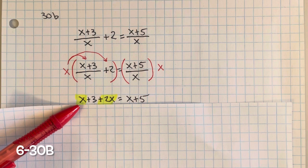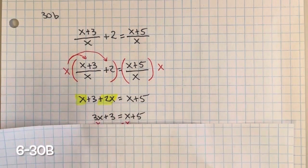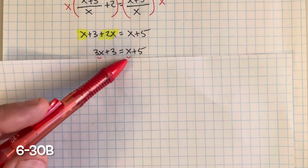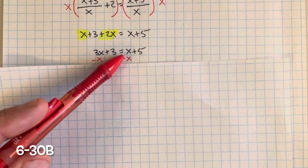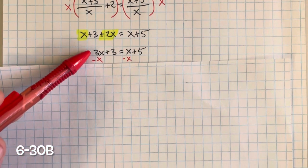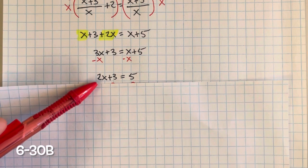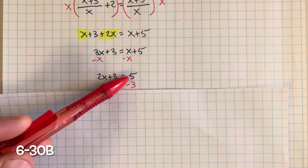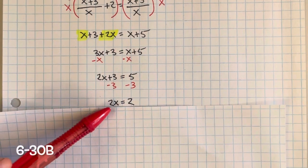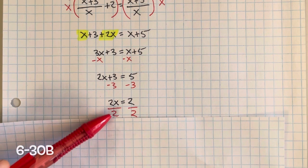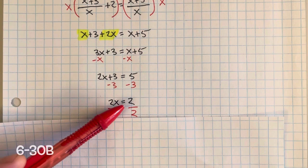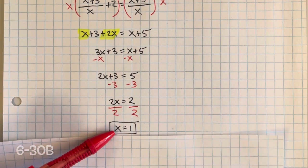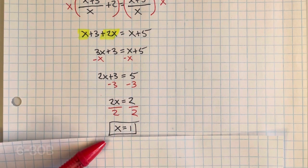We have like terms, so we simplify by combining them. 2x plus x equals 3x. We still don't have x by itself, so we subtract x from both sides — zero pair. 3x minus x equals 2x. The inverse property of addition is subtraction, so we subtract 3 from both sides — zero pair. 5 minus 3 is 2. This is multiplication, so we divide by 2 to create the giant 1. 2 divided by 2 is 1, and 1 multiplied by x is x. 2 divided by 2 is 1, so x equals 1.